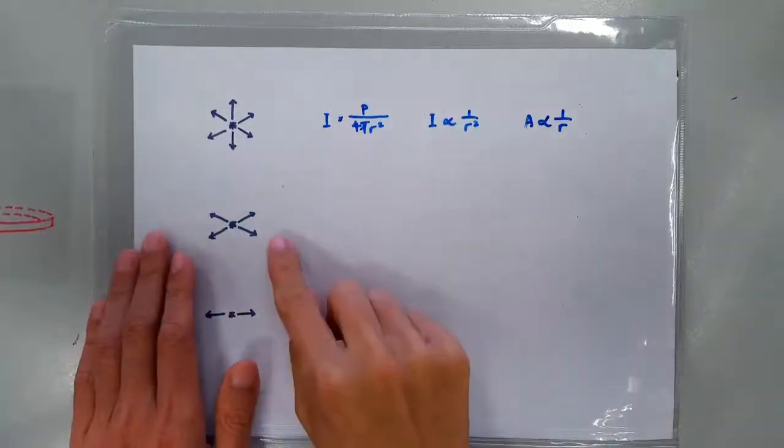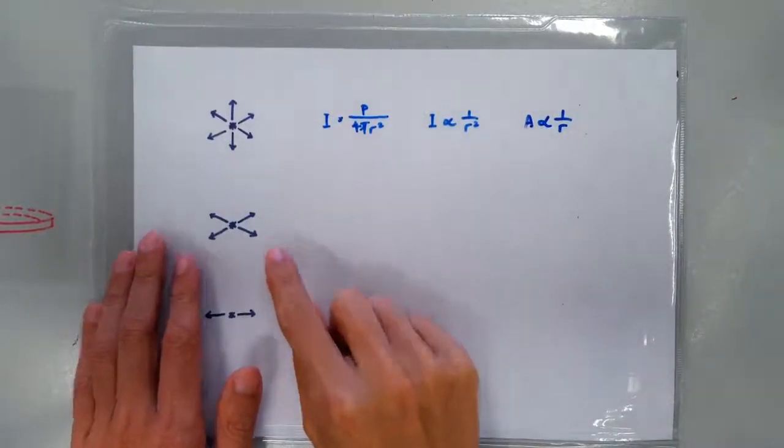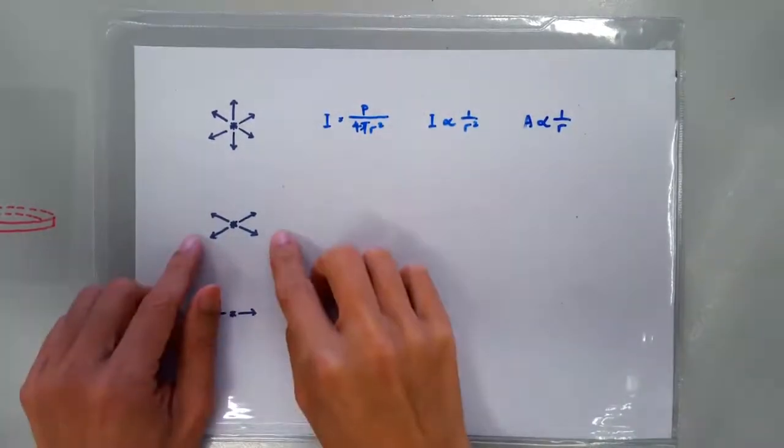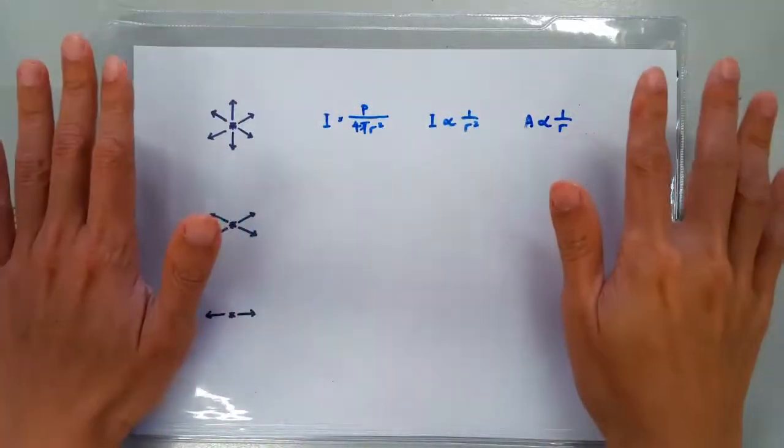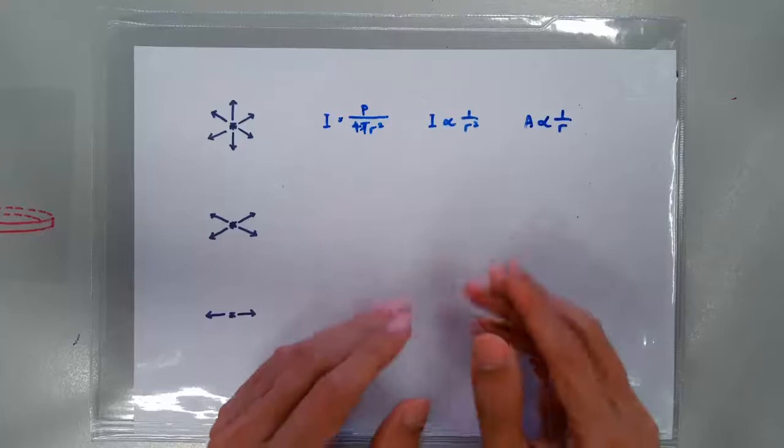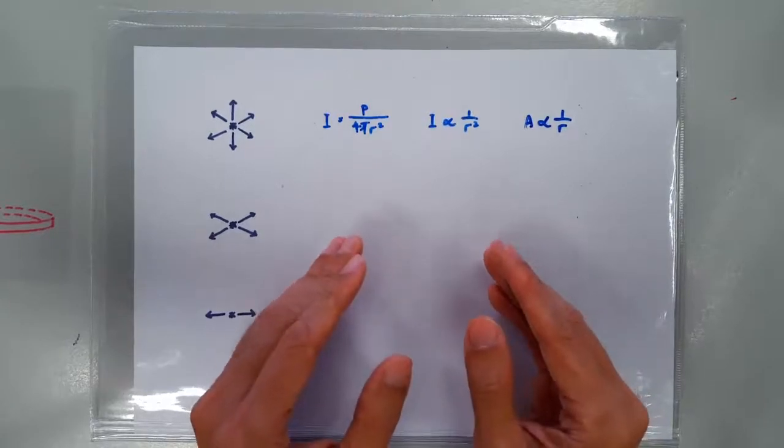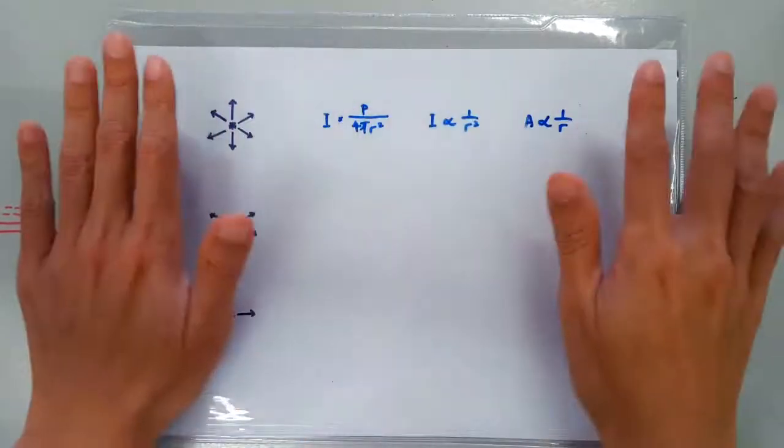Now, how about a 2D wave source? A 2D wave source propagates its energy in a plane, like the water ripple on the surface of a pond propagates on the surface of the pond.